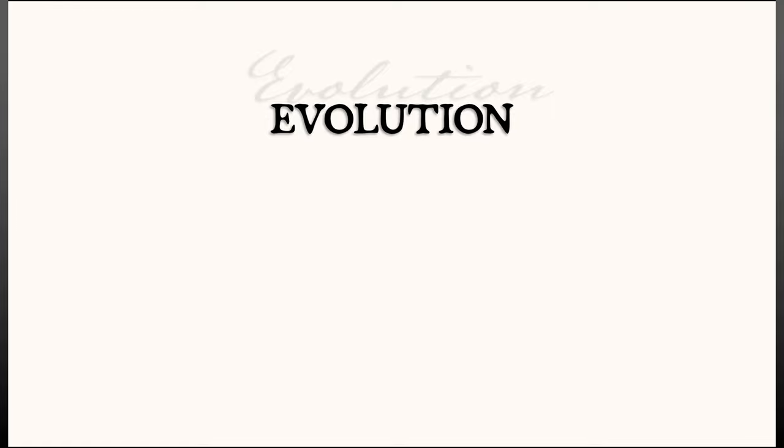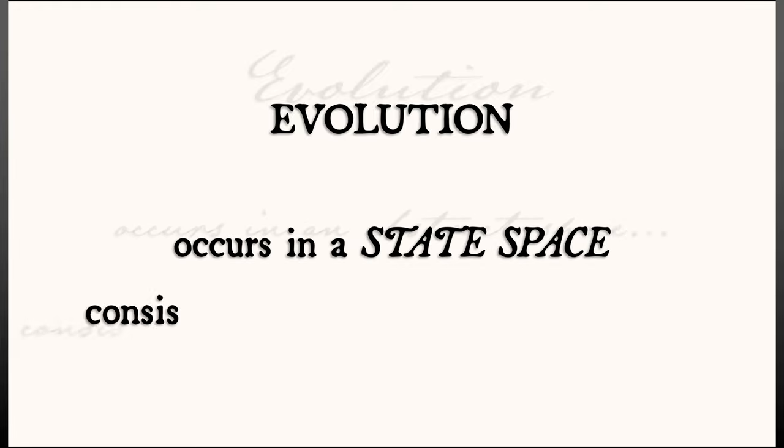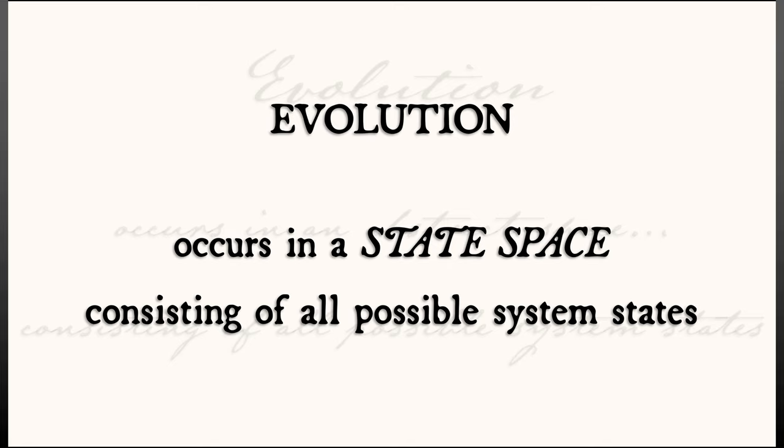In a dynamical system, things change over time, and that evolution occurs in a state space consisting of all possible system states.